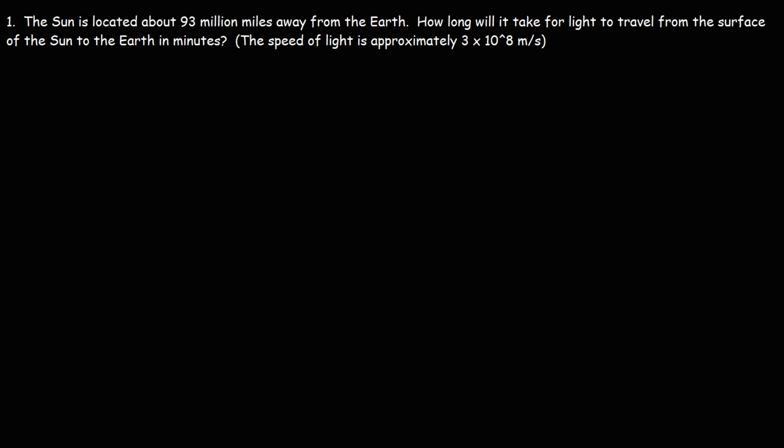The Sun is located about 93 million miles away from the Earth. How long will it take for light to travel from the surface of the Sun to the Earth in minutes? So let's draw a picture. Let's say this is the Sun and this is the Earth.